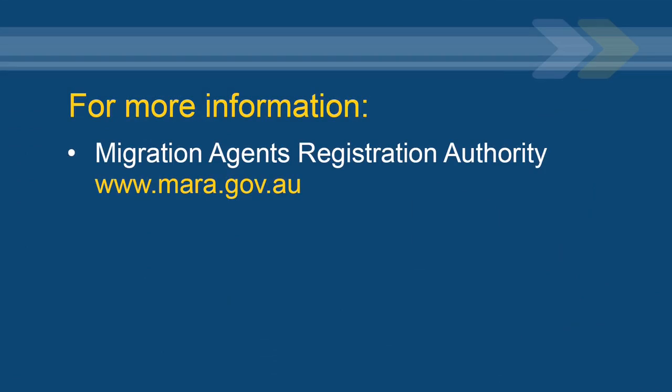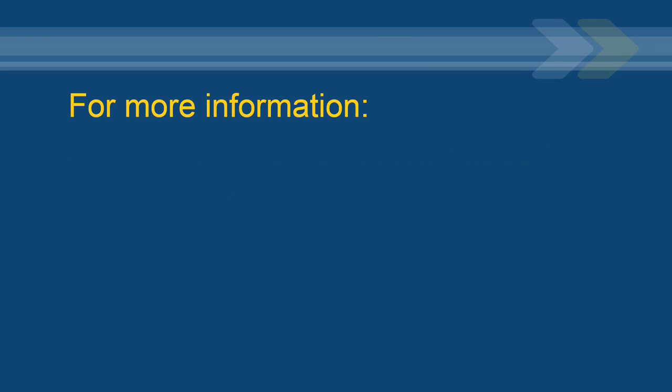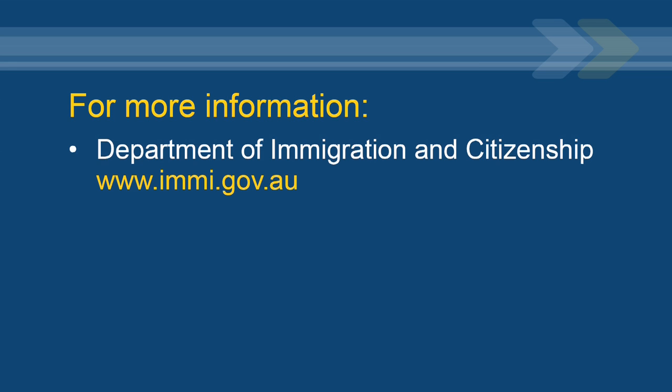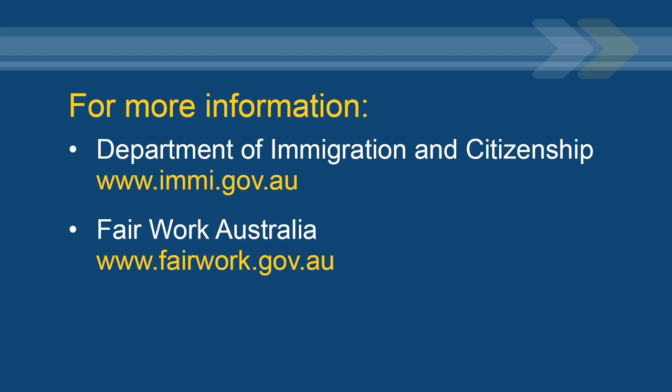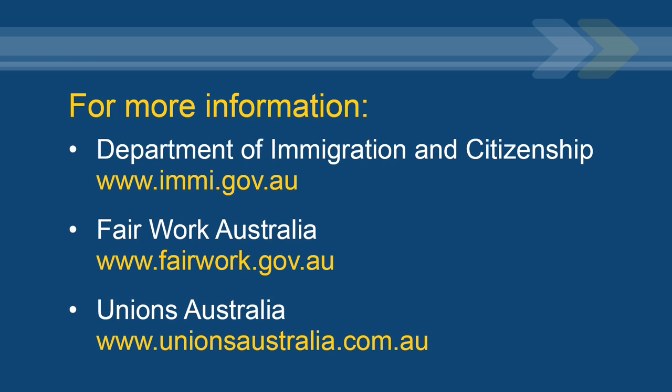It's important to understand you are not required to use a migration agent to help you with your visa application. However, if you decide to use a migration agent, you must ensure they are registered with the Office of the Migration Agents Registration Authority. Please visit the Migration Agents Registration website for more information. To find out more about your rights and obligations in Australia, please visit the Department's website. There is also more information about Australian workplace laws on the Fair Work Ombudsman website. And finally, for information about union membership, please visit the website of Unions Australia.